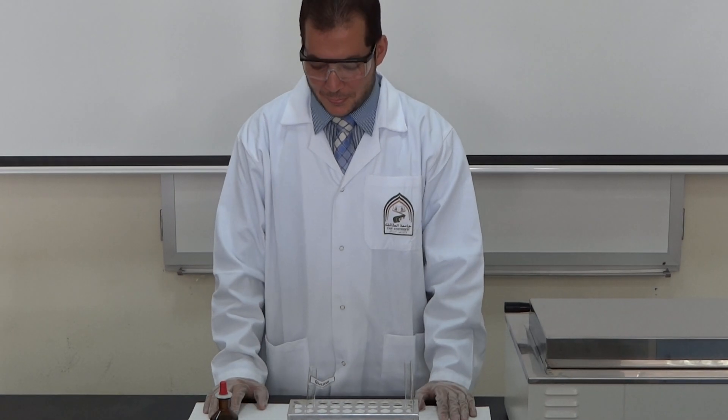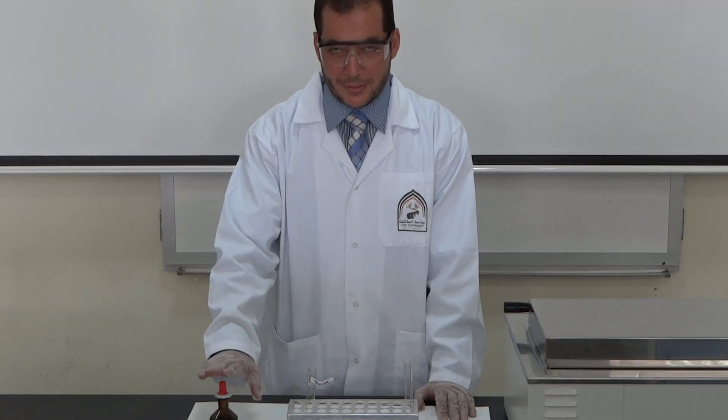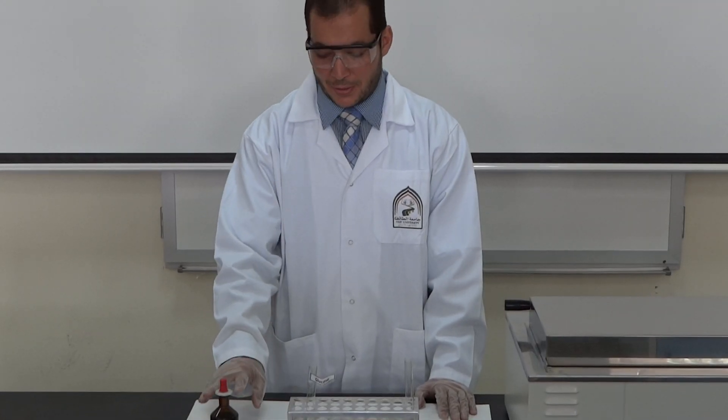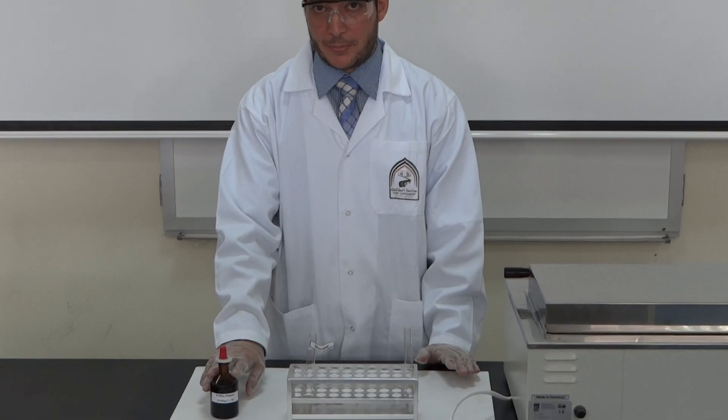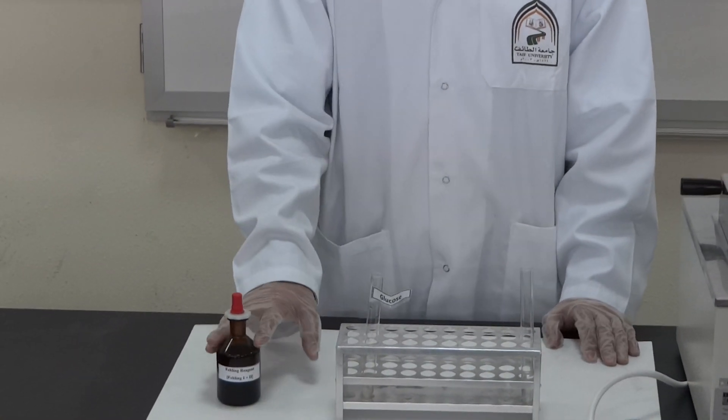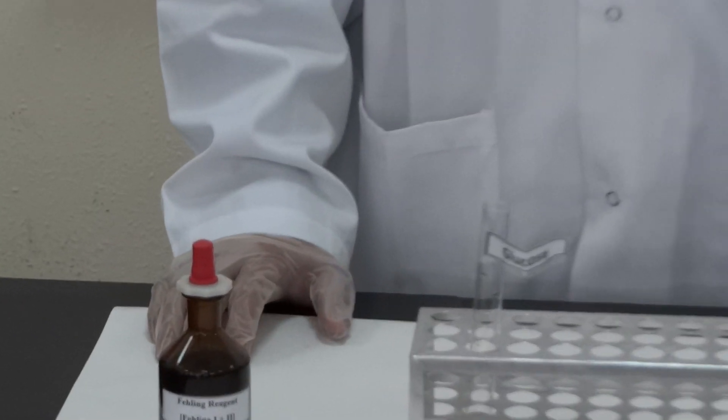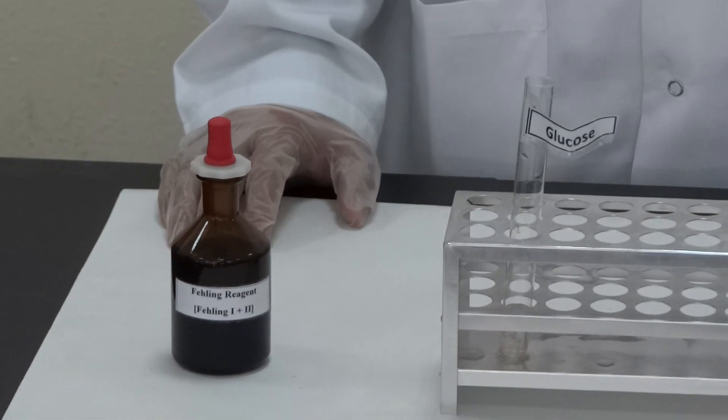Let's do Fehling's test. As we said, for Fehling's test we need Fehling's reagent, which is Fehling's A or B plus B, sometimes Fehling's 1 plus Fehling's 2, which is copper sulfate, and the other one is sodium hydroxide plus sodium potassium tartrate.